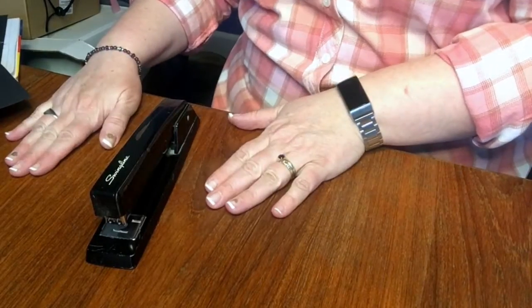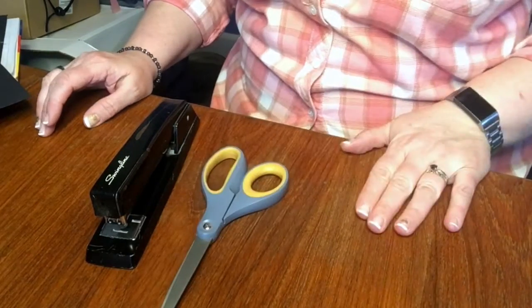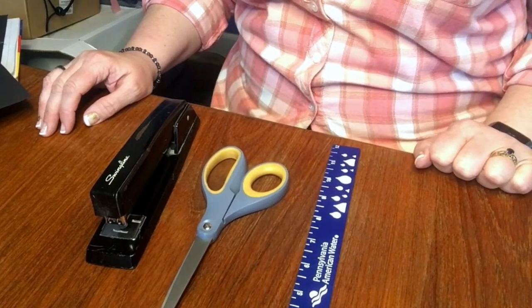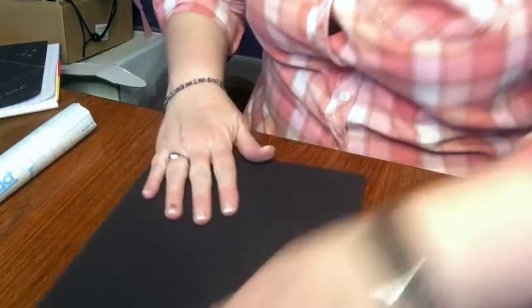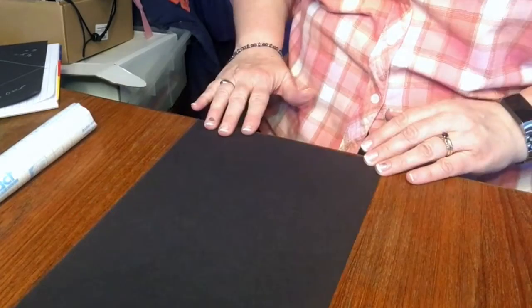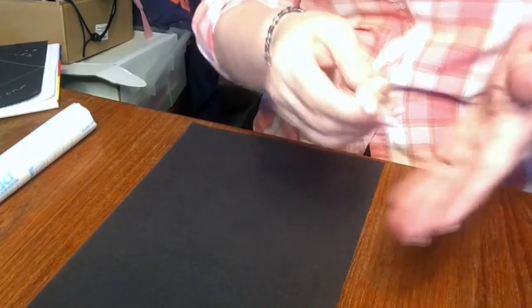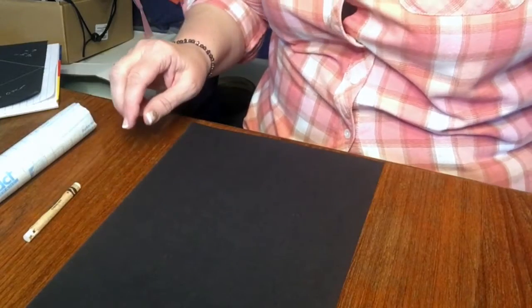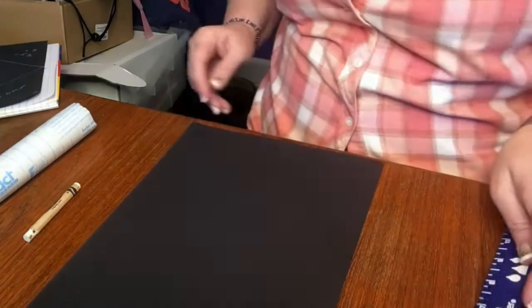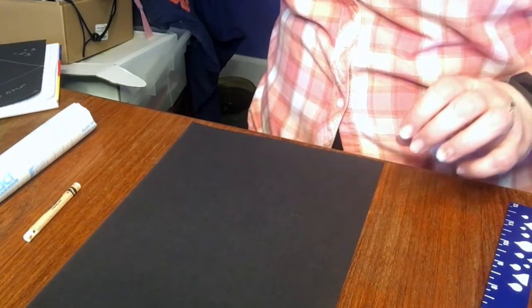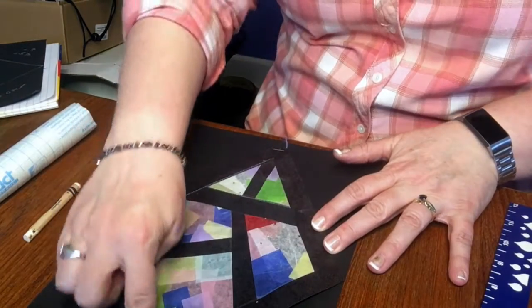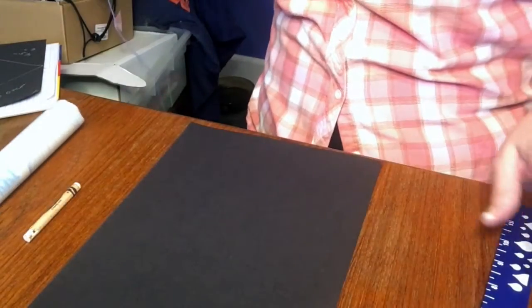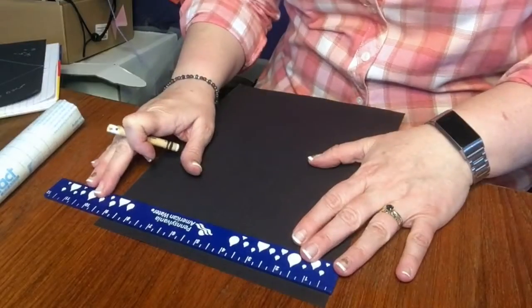What you're going to need from home today is a stapler or some tape, a pair of scissors, and a ruler. Let's get started. We're going to start with one piece of black construction paper, your white crayon, and your ruler.